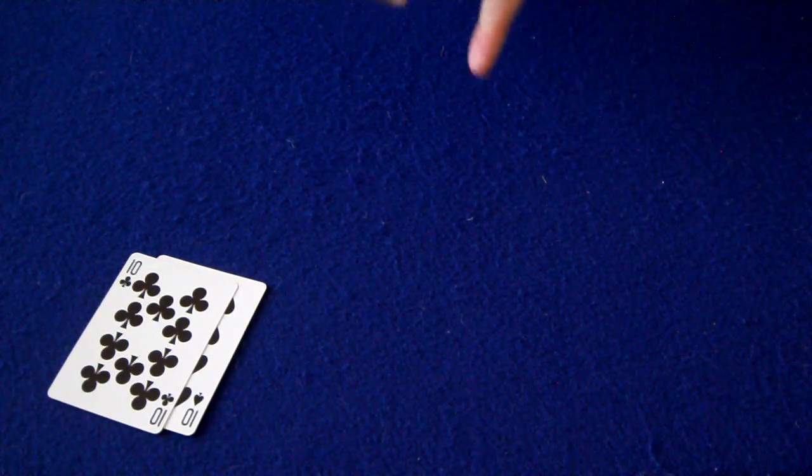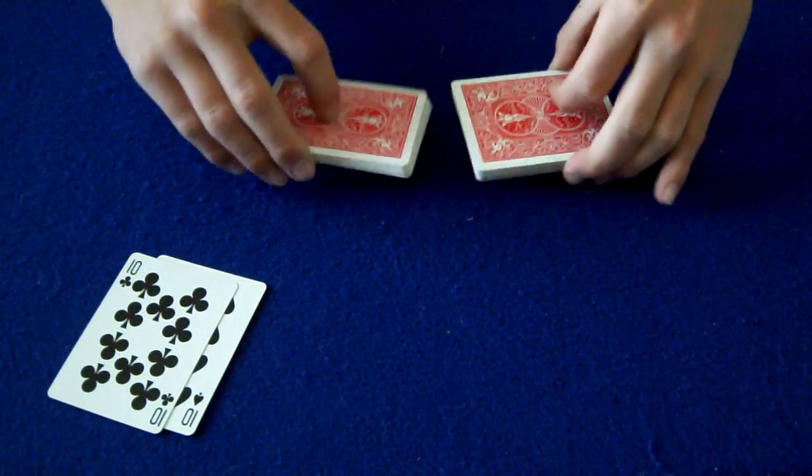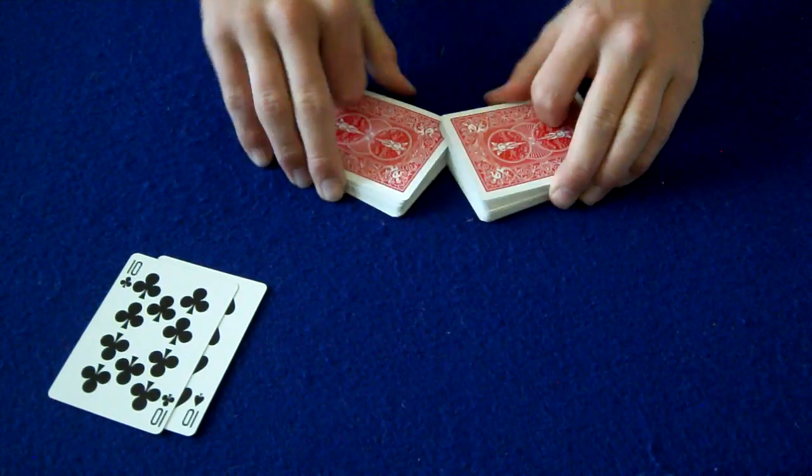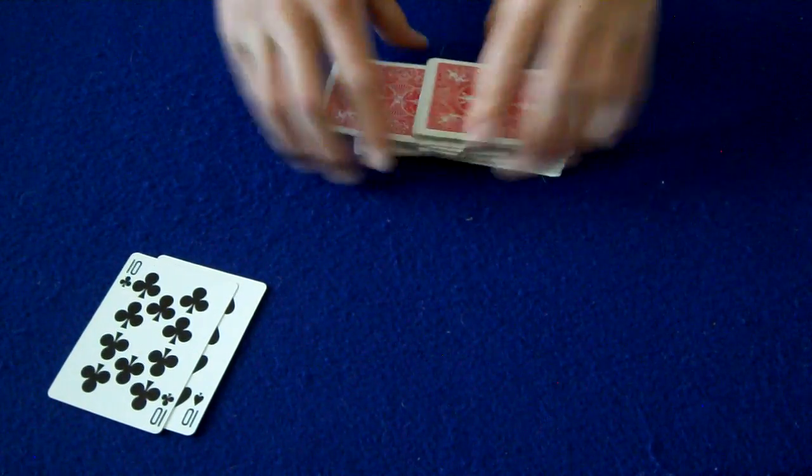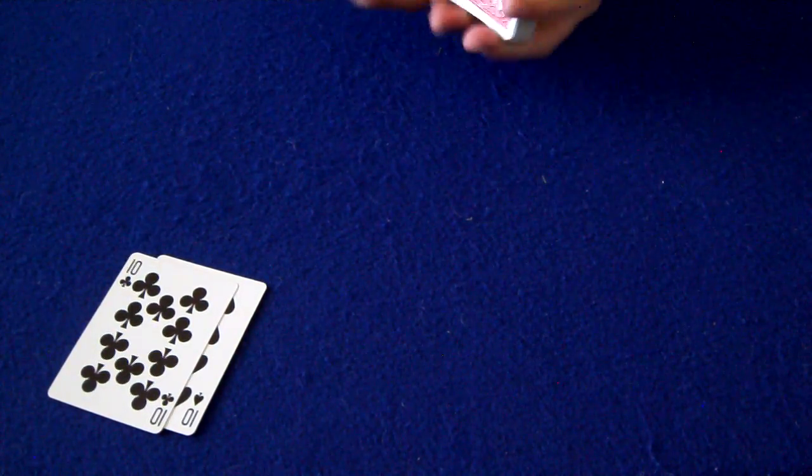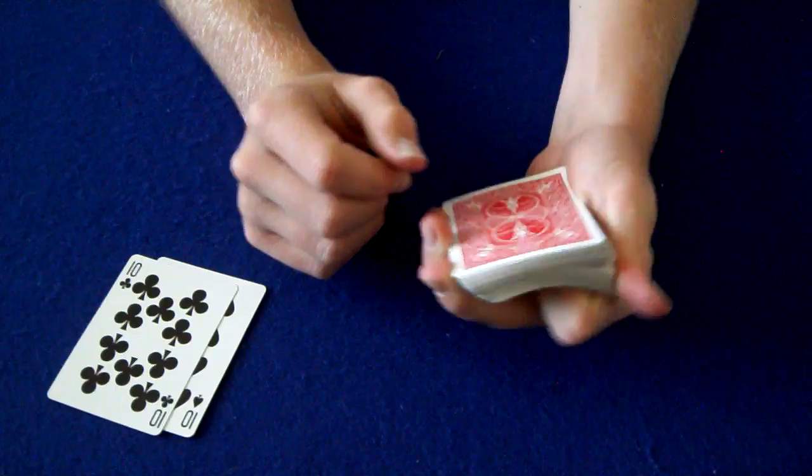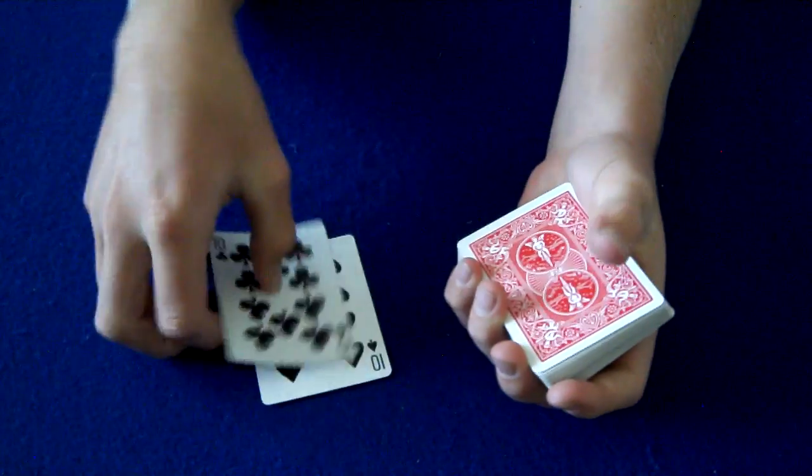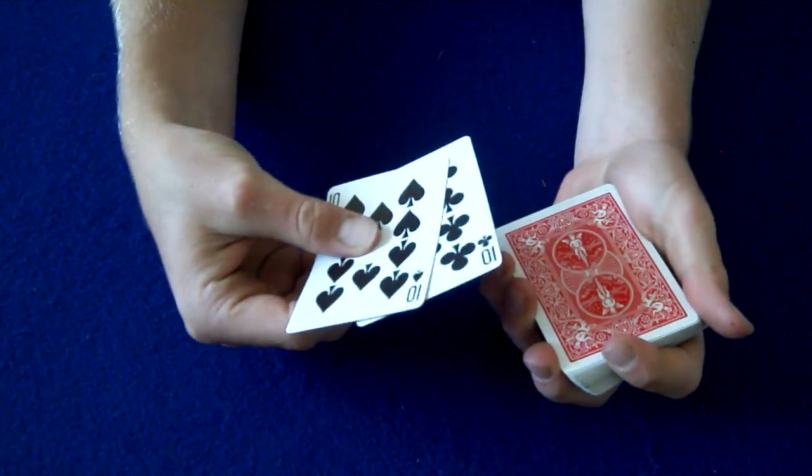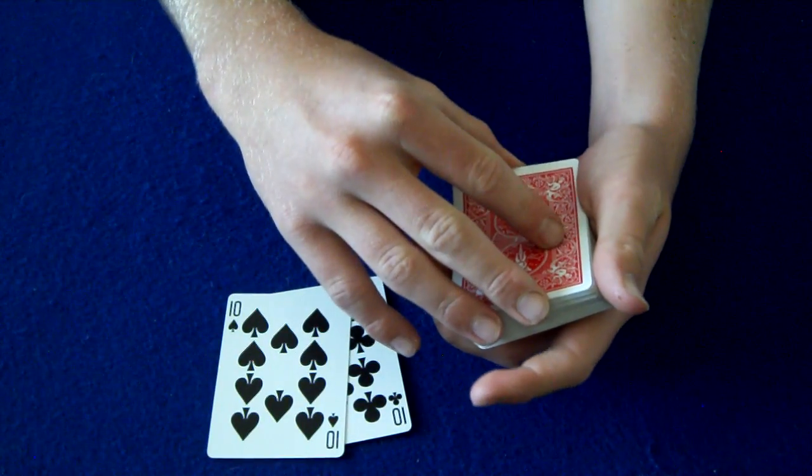So now your two selections are lost somewhere in the middle of the deck. We can even shuffle it up a bit. Okay, just like that. Now, there's actually two ways that you can find a card: with magic or with instinct. So I'm going to show you magic first.